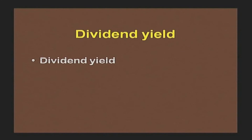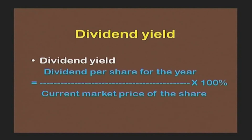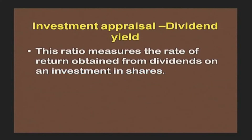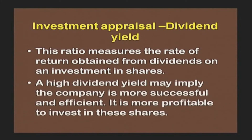The last in the list is dividend yield. It is computed as dividend per share for the year (DPS) divided by current market price of the share (MPS) × 100. This ratio measures the rate of return obtained from dividends on investment in shares. A high dividend yield may imply the company is more successful and efficient, and it is more profitable to invest in these shares.